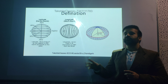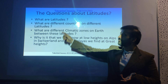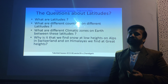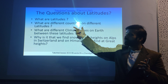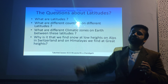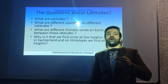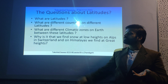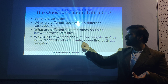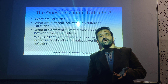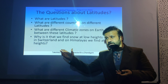Now let's understand latitudes one by one. The questions I'm going to answer are: what are latitudes, which countries lie on different latitudes, what are the different climate zones — tropical, temperate, polar — and why do we find snow at high altitudes in places like the Alps, Switzerland, and the Himalayas? All of this is because of latitudes.